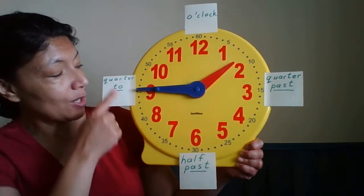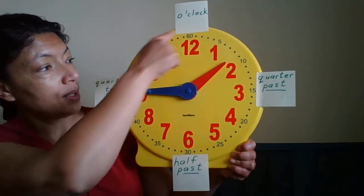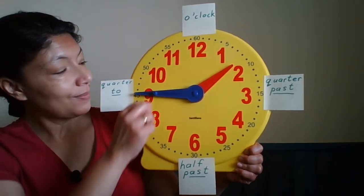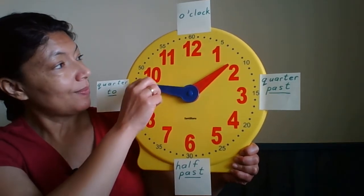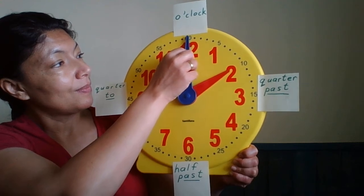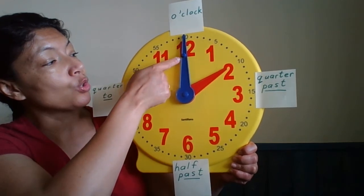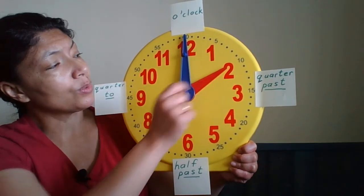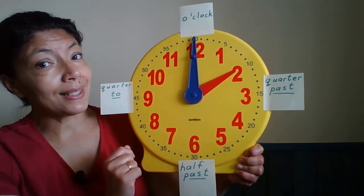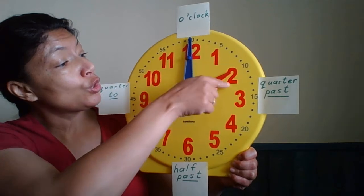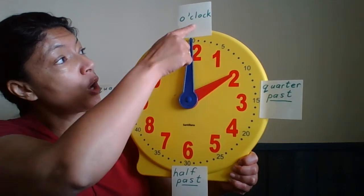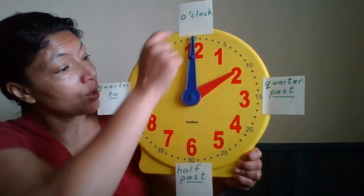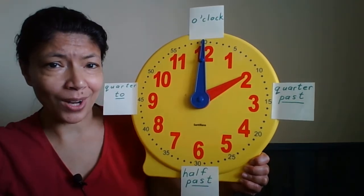It's quarter to two. The big hand is on the twelve. The small hand is on the two. It's two o'clock. Why don't you try it?